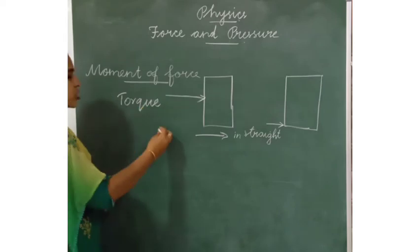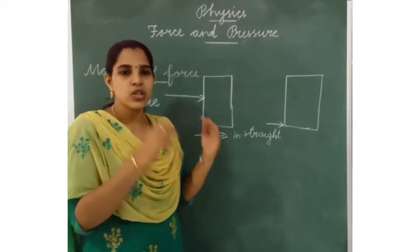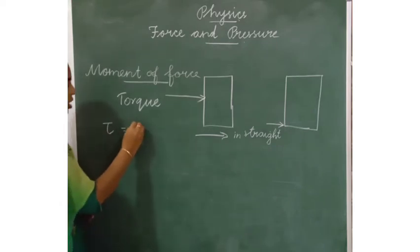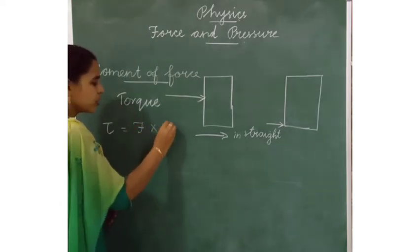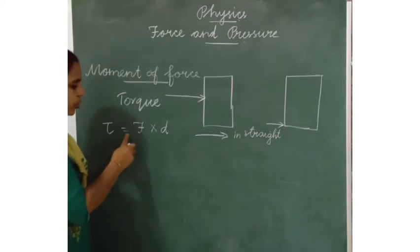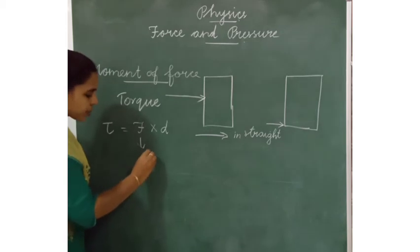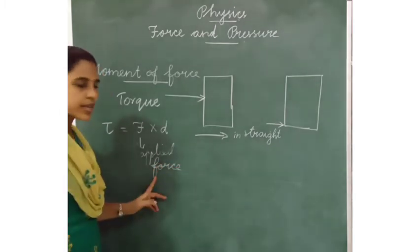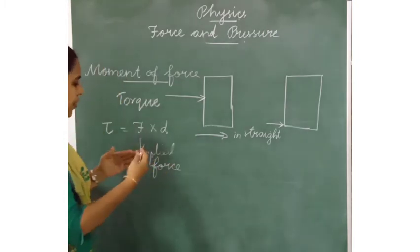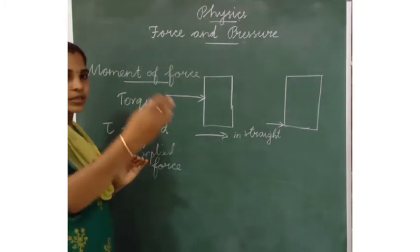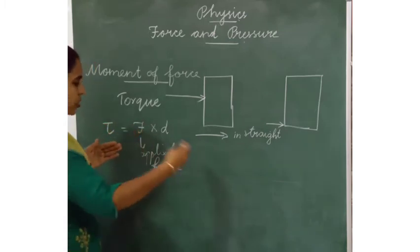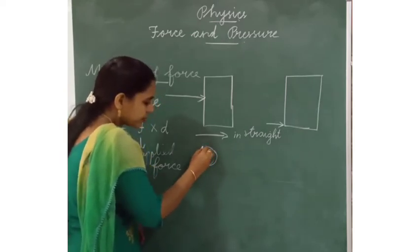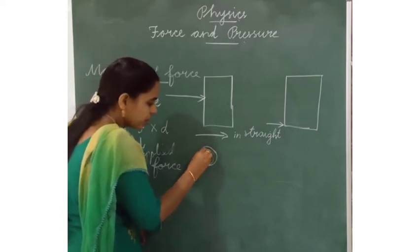We have a fixed point at the top. The turning effect of force always produces a rotation at the top. The formula for torque is: tau is equal to F into D. Tau is equal to F into D. F is the applied force. This is the example of a spanner — in between, one nut is there.